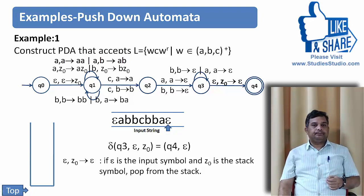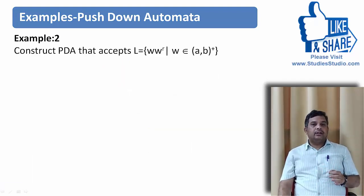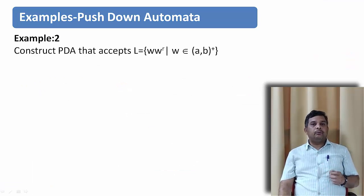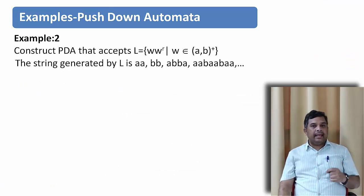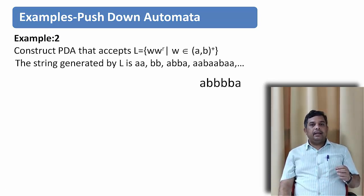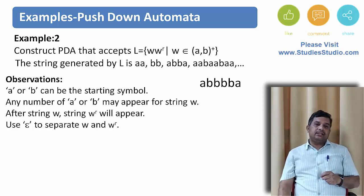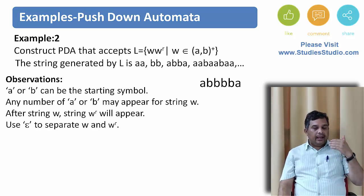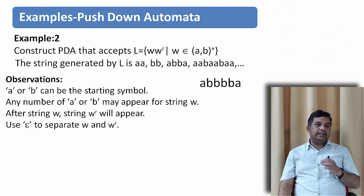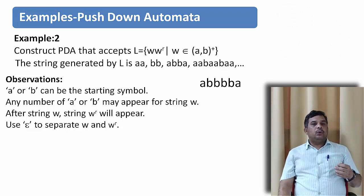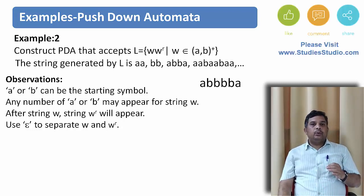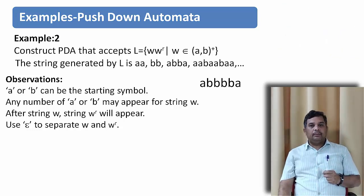Let us modify this a little bit. The next example is: construct a PDA for WW^R where W belongs to {a,b}+. Strings like a a b b a or a b b b a will be accepted. A or b can be the starting symbol, any number of a's and b's may appear in W, and after that we have W^R. To separate which part is W and which part is W^R, we use epsilon in between them.